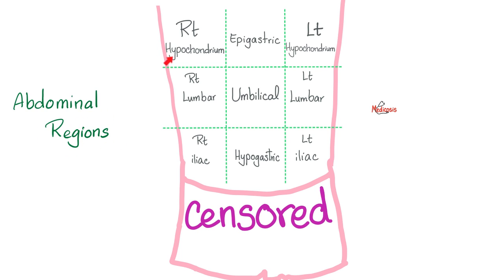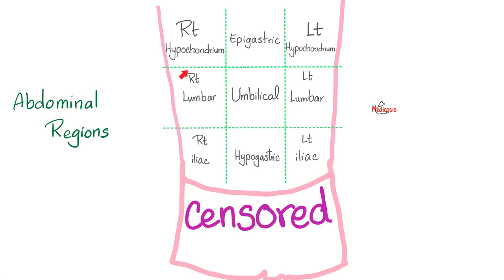How about the abdominal regions? We have nine abdominal regions: right hypochondrium, epigastric, left hypochondrium, then right lumbar, umbilical, left lumbar, right iliac, hypogastric, and left iliac. Where is the liver and the biliary system? Mostly in the right hypochondrium — the tip of the left lobe might bulge into the epigastric region, but essentially it's right hypochondrium.